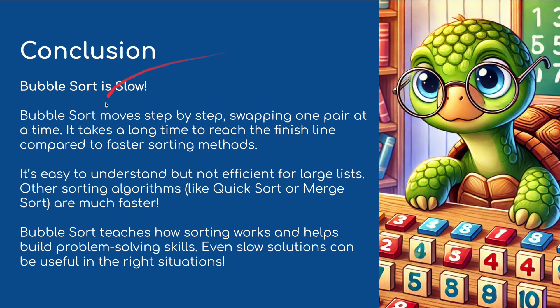Just to conclude - bubble sort is slow. If you get that as an exam question, one of the features of bubble sort is it is very, very slow - hence the tortoise. Bubble sort moves step by step, swapping one pair at a time. It takes a long time to reach the end compared to faster sorting methods. It's easy to understand but not efficient for large lists.